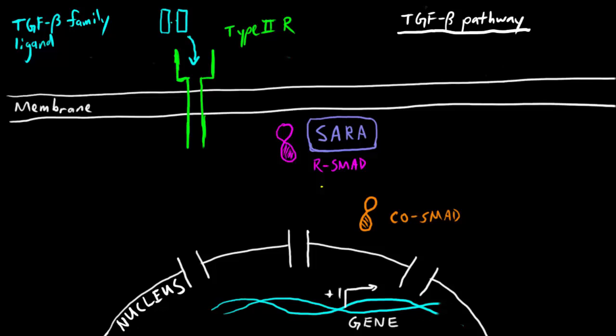The TGF beta pathway is involved in many different processes. The focus that we've put on it in this block has been on its role in vascular development, but it's also involved in many other developmental processes. With these pathways, they start most of the time with ligand binding. Let's talk about what ligand binding does for this pathway.